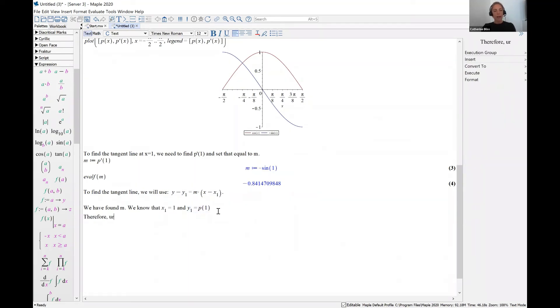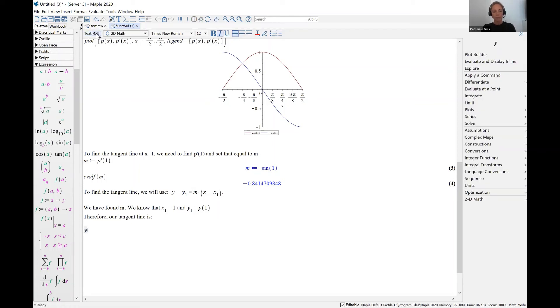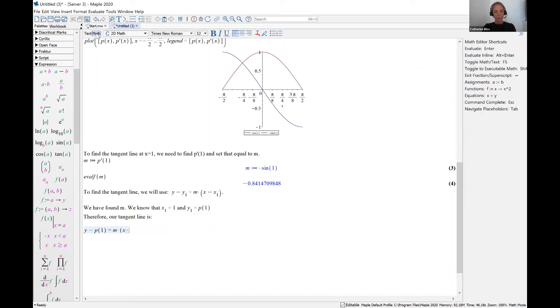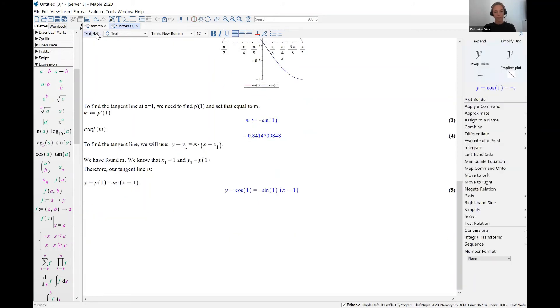Therefore, our tangent line is y minus p evaluated at one equals m, which is our slope times x minus one. So Maple tried to compute that. And the best that it did, it said that y minus cosine of one equals negative sine one times x minus one. And that's accurate. That's actually an exact expression for the tangent line. It looks a little bit strange, just because we don't have fractions or whole numbers to really get a sense of things. But you know, we could always do an eval f if we needed to to take a look at what those numbers were.